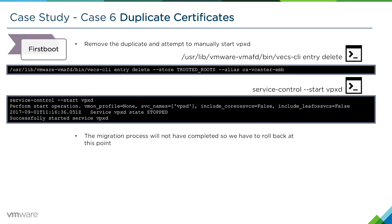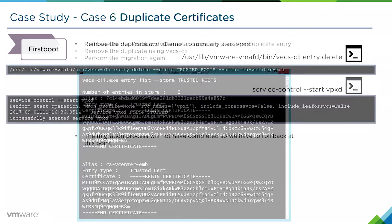At this point the migration has failed and there's no way to start the migration process again from this point, so we have to roll back and begin it again. But before we begin the migration process again, we need to do exactly what we just did here, but on the source Windows vCenter server.